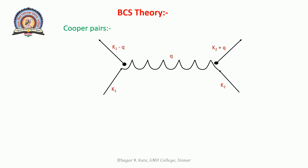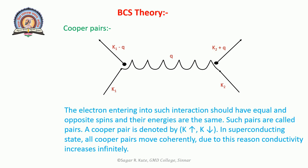The first electron with wave vector K1 emits a virtual phonon — that is, a lattice vibration Q — which is absorbed by the second electron with wave vector K2. This short-lived phonon is called a virtual phonon, and the two electrons are scattered with wave vectors K1 minus Q and K2 plus Q. The electrons entering into such interaction should have equal and opposite spin, and their energies are the same.